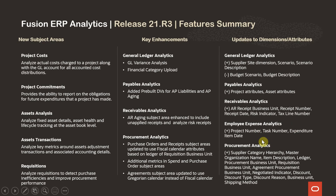And in procurement analytics, we have included quite a few attributes as shown here: supply category hierarchy, master organization name, item description, ledger, procurement, requisition and agreement business units, negotiated indicator, discount, discount type, discount reason, business unit and shipping method.